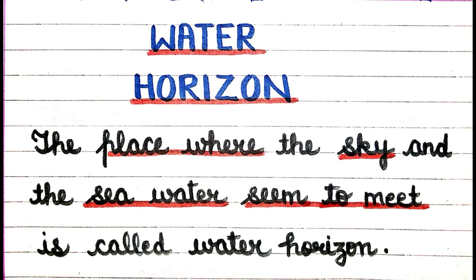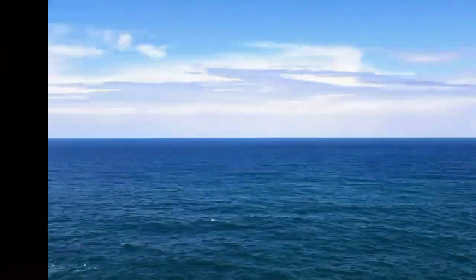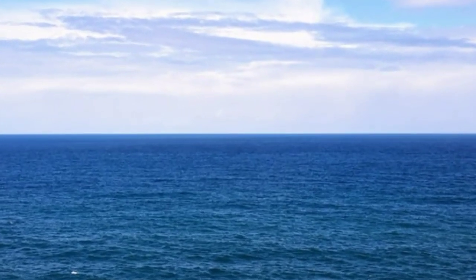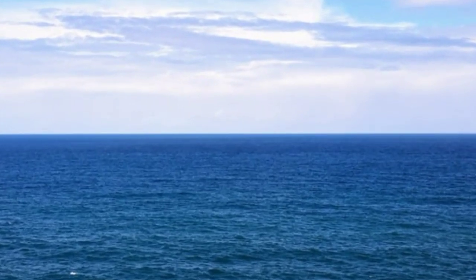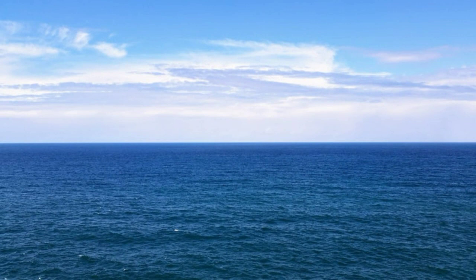What is a water horizon? The place where the sky and the sea water seem to meet is called water horizon. If we stand at the seashore and look at the sea, it will seem that the sky is meeting the sea at a distance. Just like land never meets the sky, water too never meets the sky. This is the difference between land horizon and water horizon.